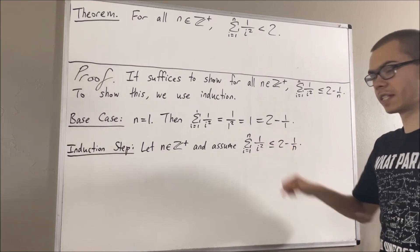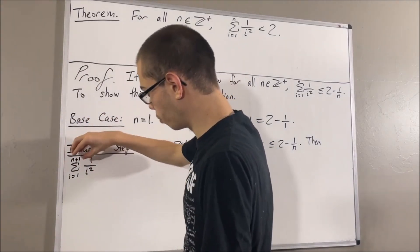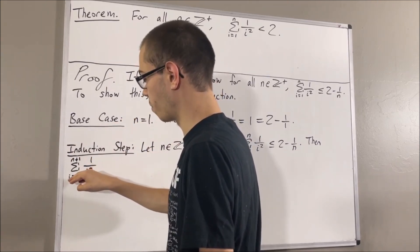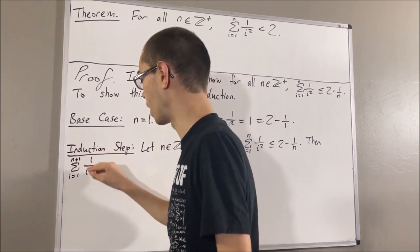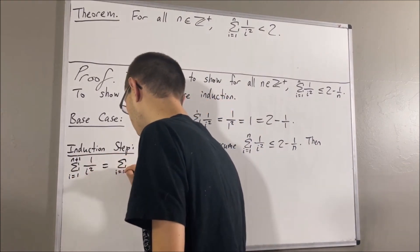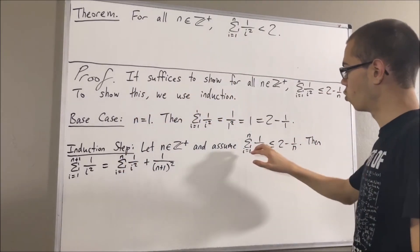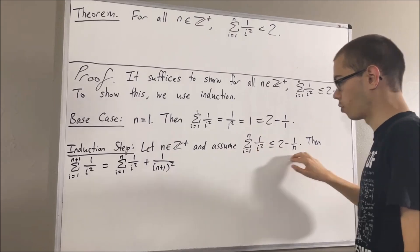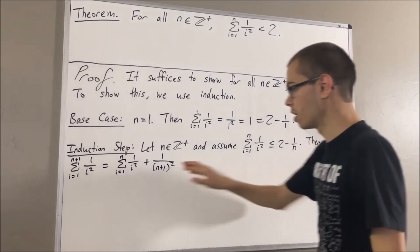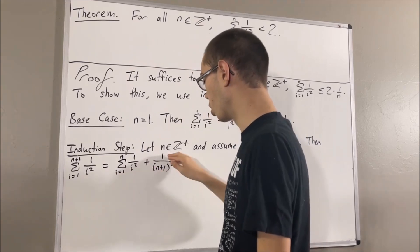Well, let me start by writing the left-hand side. What we're going to do is pull away the (n+1)th term from the sum, so that this is equal to the sum from i equals 1 to n of 1 over i squared plus 1 over (n+1) squared. By the induction hypothesis, we know that this sum is less than or equal to 2 minus 1 over n. So this entire thing must be less than or equal to 2 minus 1 over n plus 1 over (n+1) squared.